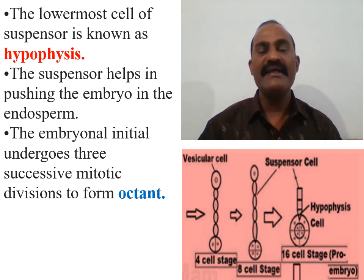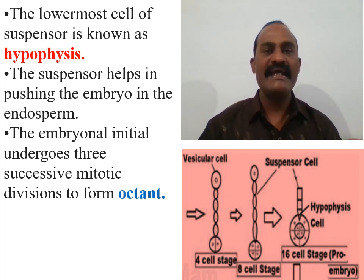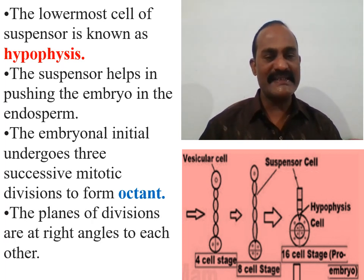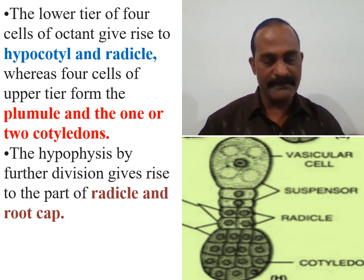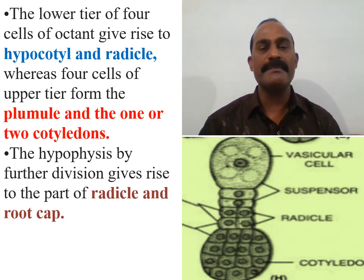The embryonal initial cell undergoes three successive mitotic divisions to form the octant cell. In the first division it becomes a two-cell stage, in the second a four-cell stage, and in the third it forms the octant embryo — the eight-celled stage. The lower tier of four cells of the octant gives rise to the hypocotyl region and radicle, whereas the four cells of the upper tier form the plumule and one or two cotyledons.